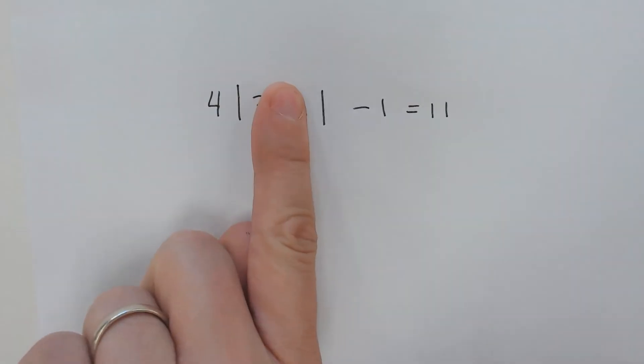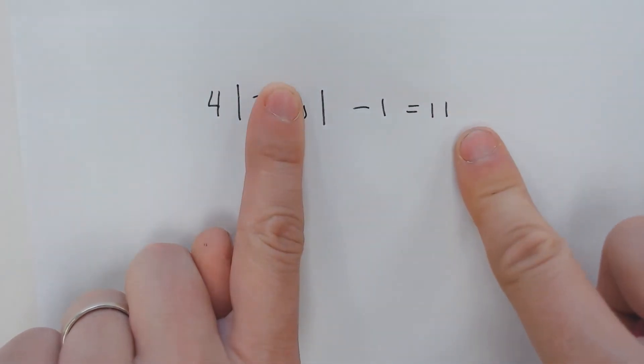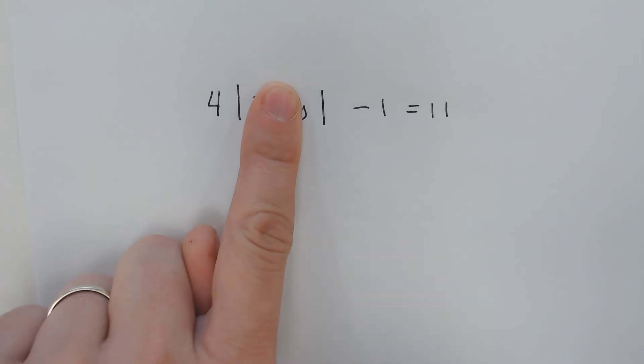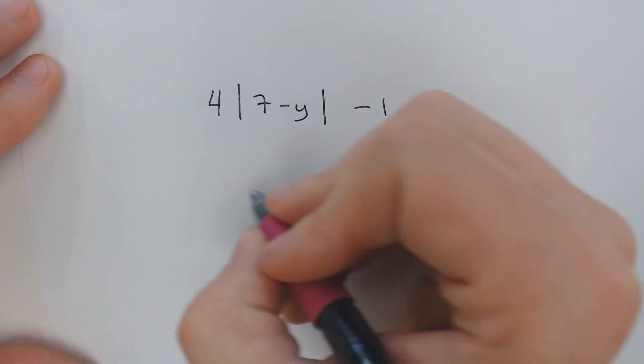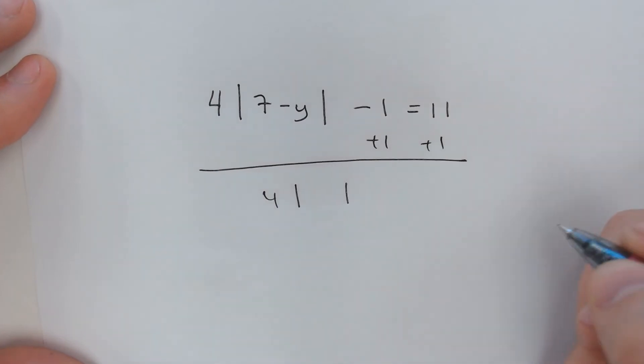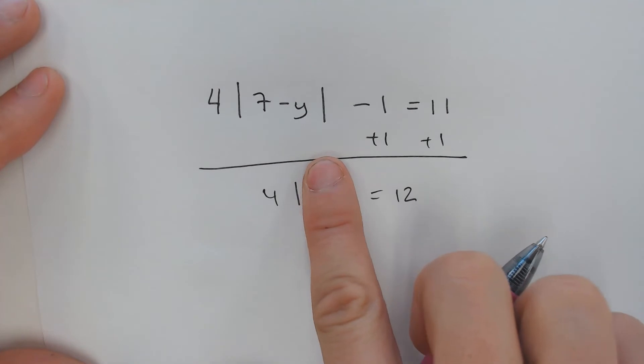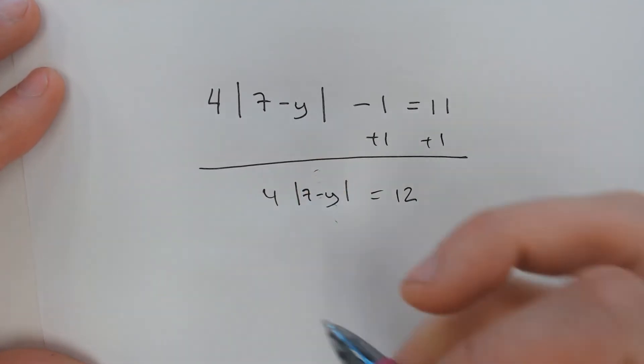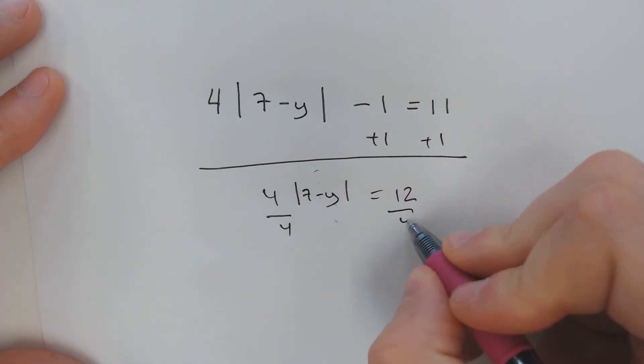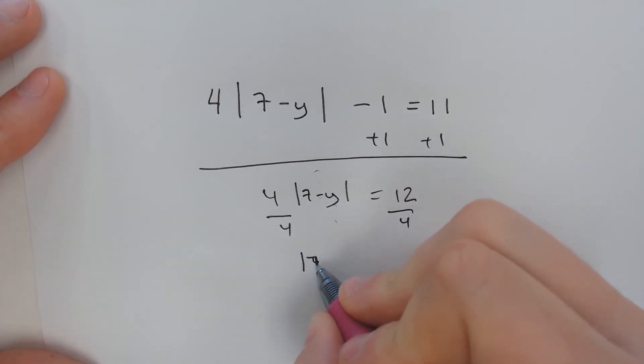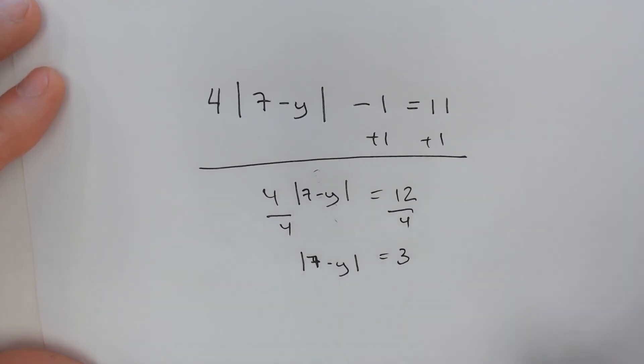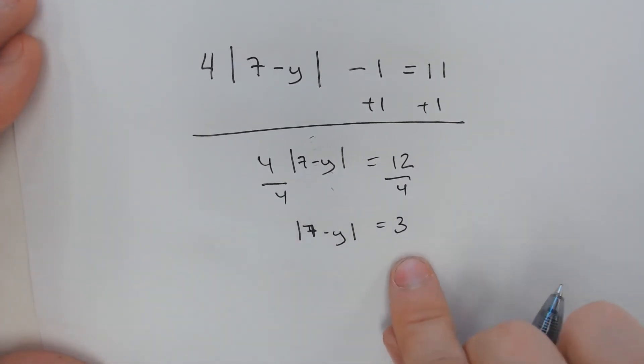If you just pretend it isn't crazy, if you were solving for the absolute value like an X, that would be like 4X minus 1 equals 11. You could add 1 to both sides, get 4 times absolute value equals 12, and it's 7 minus y. But you're pretending that's just an X. Doesn't matter what that is. Divide by 4. Absolute value of 7 minus y equals 3.